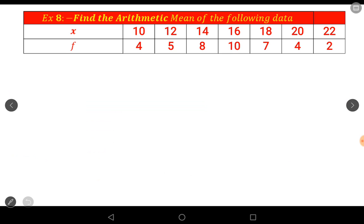First of all, we find the mean by the first method. Here the data x is the observations, f is the frequency. The 10 observation is 4 times, 12 observation is 5 times, 14 observation is 8 times, 16 observation is 10 times, 18 observation is 7 times, 20 observation is 4 times, 22 observation is 2 times.